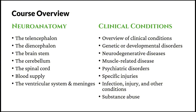As for clinical conditions, we will first have an overview of all the clinical conditions, their symptoms, diagnosis, and treatment methods. Then we will look at different types of clinical conditions, including genetic and developmental disorders, neurodegenerative diseases, muscle-related diseases, psychiatric disorders, specific injuries, infection, injury, and other conditions, and finally substance abuse.